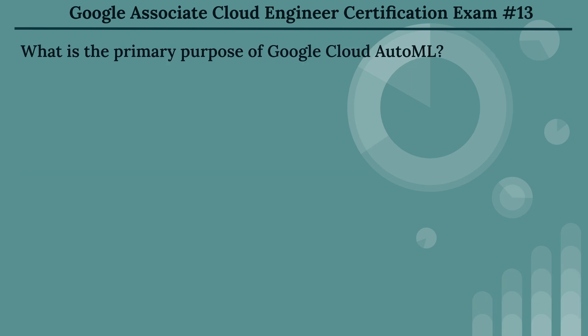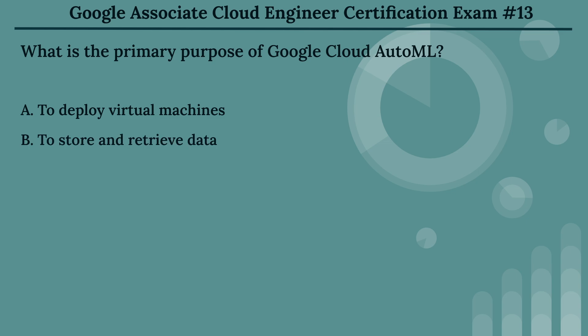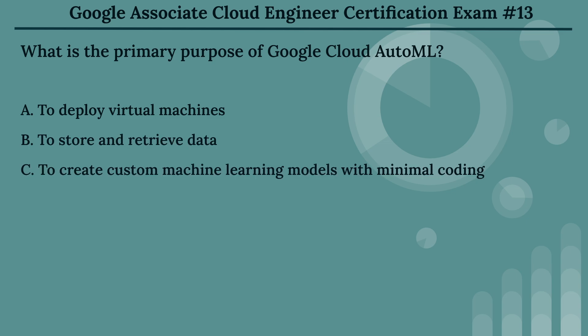The thirteenth question: what is the primary purpose of Google Cloud AutoML? The options are: Option A, to deploy virtual machines. Option B, to store and retrieve data. Option C, to create custom machine learning models with minimal coding. Option D, to manage cloud billing.